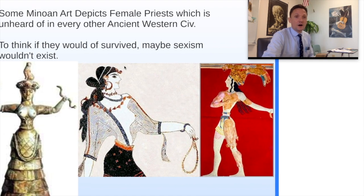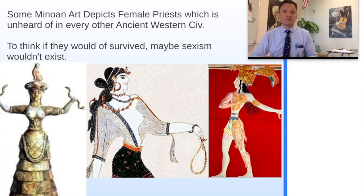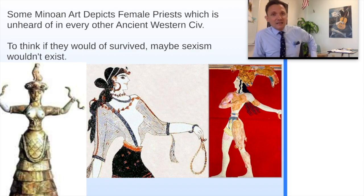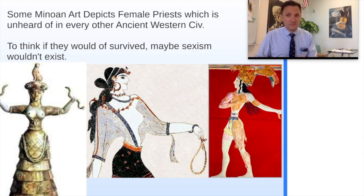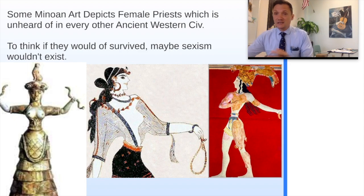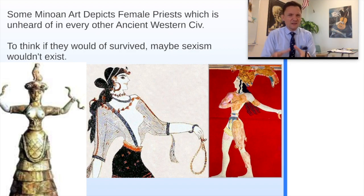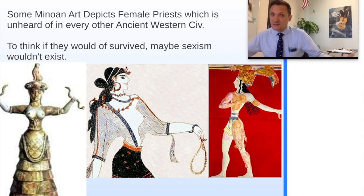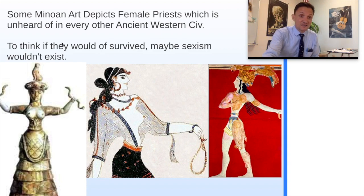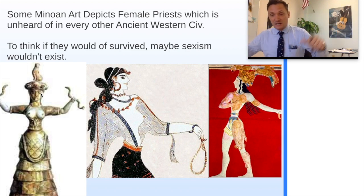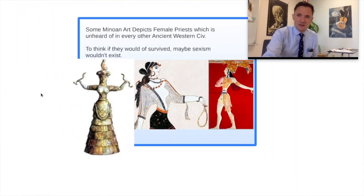Also, some other major leaps forward: some Minoan art actually depicts female priests, which is unheard of in any ancient Western civilization. You did not hear of equality in religion with female representatives in any major ancient civilization with the exception of the Minoans. To think for a moment — had they survived and prospered, maybe sexism in that field would not have actually existed. One of their chief goddesses is actually female herself — she's actually clutching two snakes in her hands right there — and female priestesses were a major element of their society.